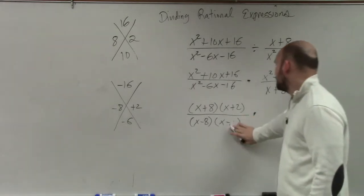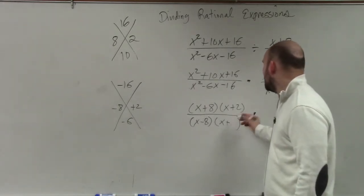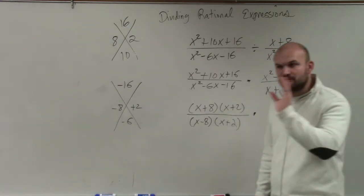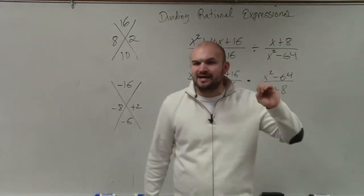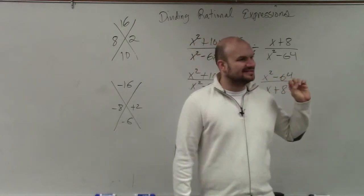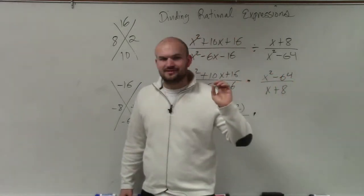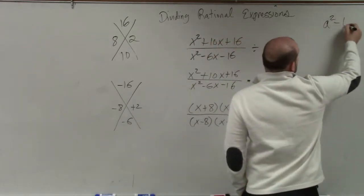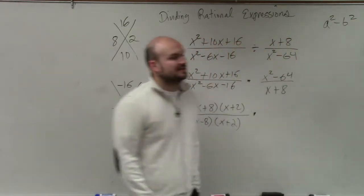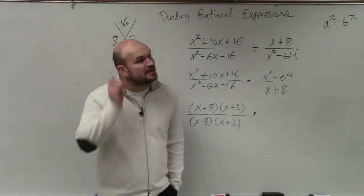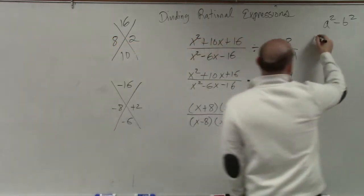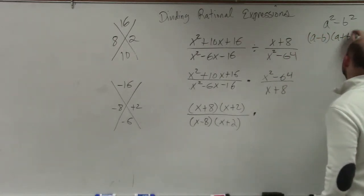Whenever we see two terms we either factor the GCF or factor by the difference of two squares. If you guys don't remember the difference of two squares, it's a factoring technique that we went over in this class that states when you have a square term minus another square term, you can factor that into a minus b times a plus b.